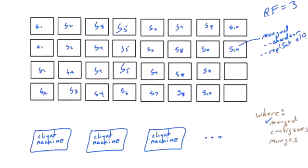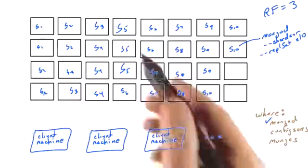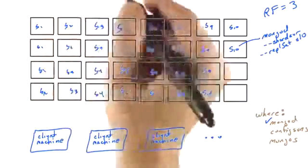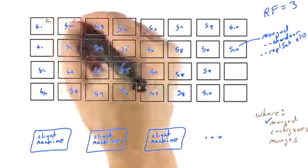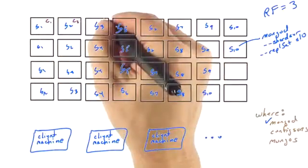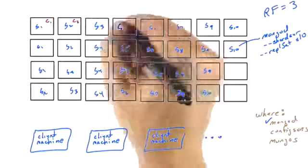One approach would be to just put the config servers on any random machines in the cluster. So we could do that. I'll use the letter C for those. C1, C2, could be anywhere. I'll just use this one, C3.